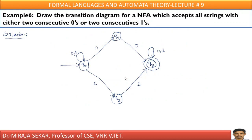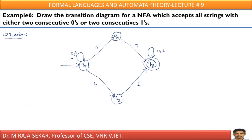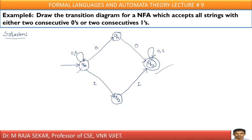Last example: draw the transition diagram for NFA which accepts strings with either 2 consecutive 0s or 2 consecutive 1s. Let Q0 be the initial state and Q3 be the final state. For 2 consecutive 0s — on the 1st zero I stay here, and on the 2nd zero I go to Q3. So '00' is accepted, and similarly '11' is also accepted. Before the consecutive pair, you can keep any number of 0s and 1s, and after reaching Q3 also you can keep any number of 0s and 1s. Thank you very much.